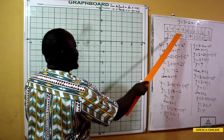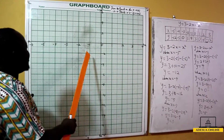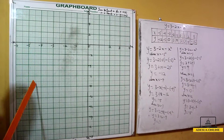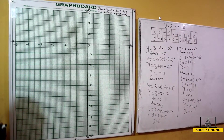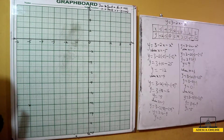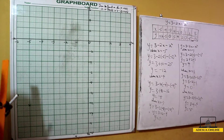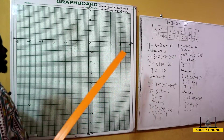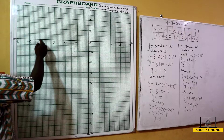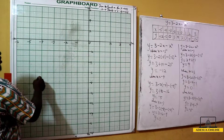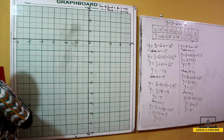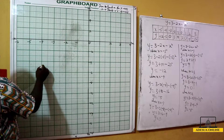Now we plot the points. When x is negative 5, y is negative 12: locate negative 5 on the x-axis and negative 12 on the y-axis and mark it. When x is negative 4, y is negative 5: locate negative 4, and since negative 5 is between negative 4 and negative 6 on the y-axis, mark the point negative 4, negative 5.